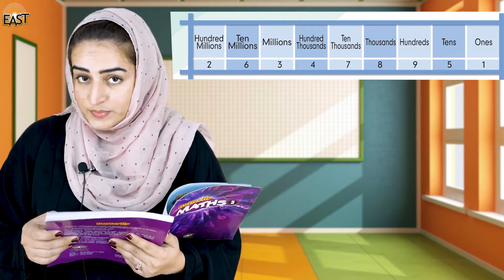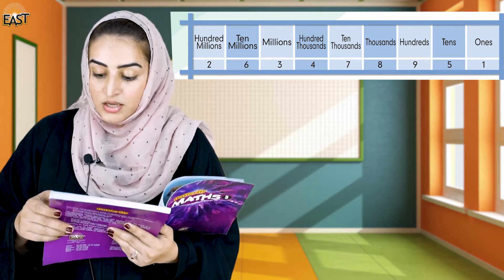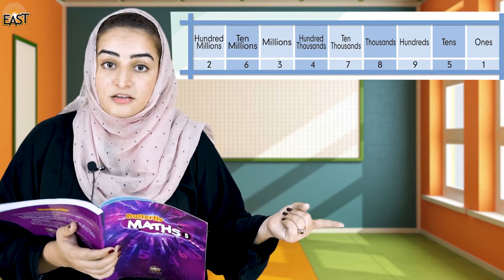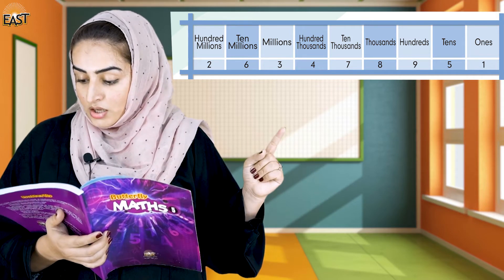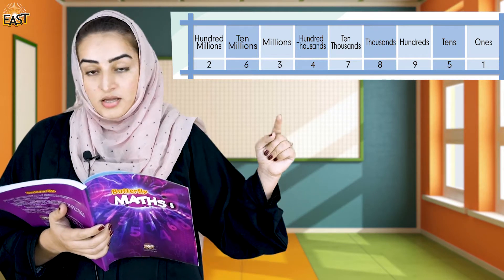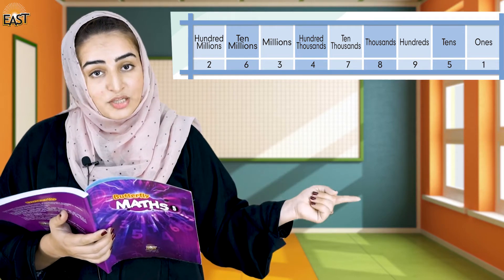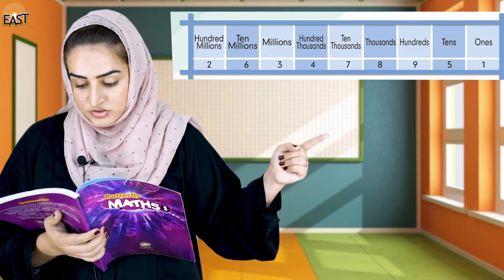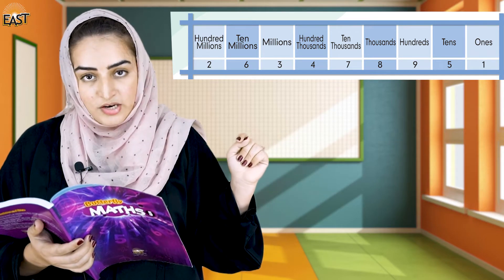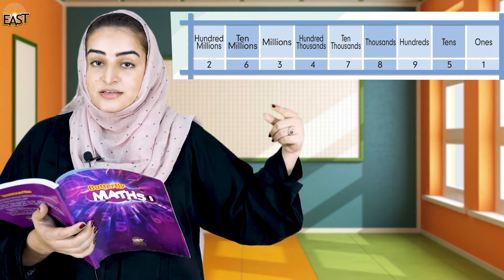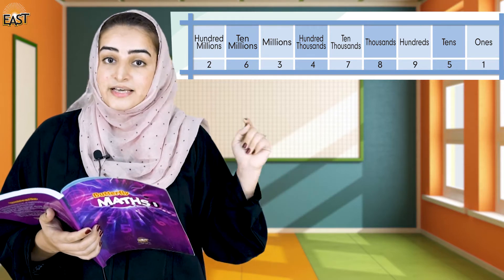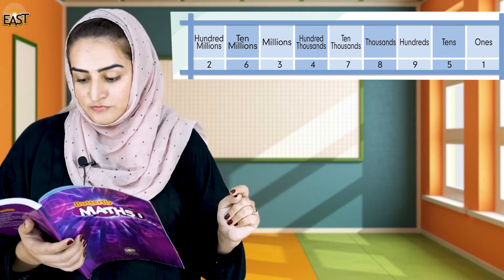When 1 is in the ones place, its value is 1. When 5 is in the tens place, its value is 50. When 9 is in the hundreds place, its value is 900. When 8 is in thousands, it is 8,000. When 7 is in ten thousands, it is 70,000. When 4 is in hundred thousands, it is 400,000. Then 3 million, then 60 million, then 200 million. This is the expanded form.